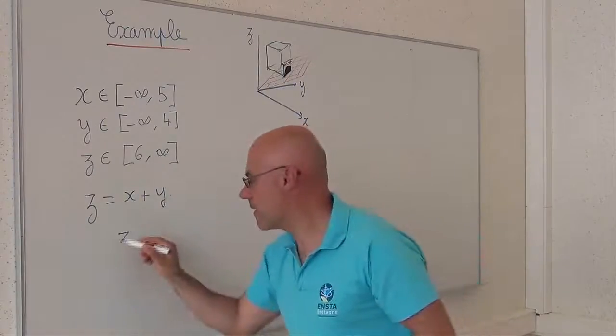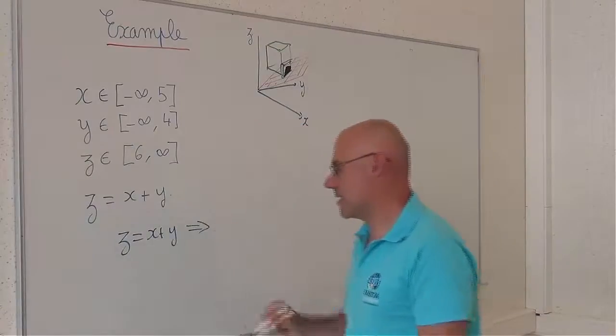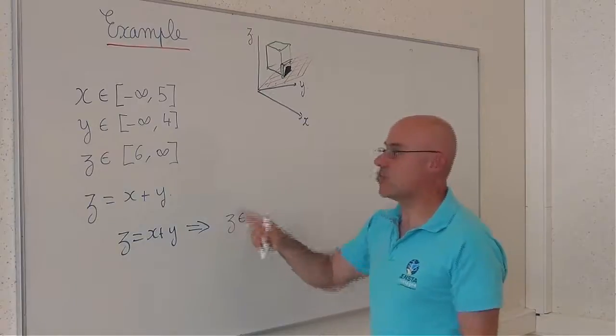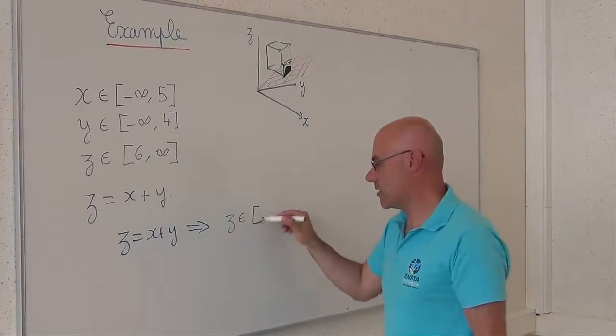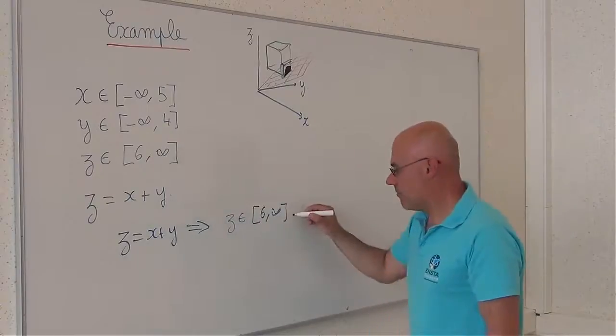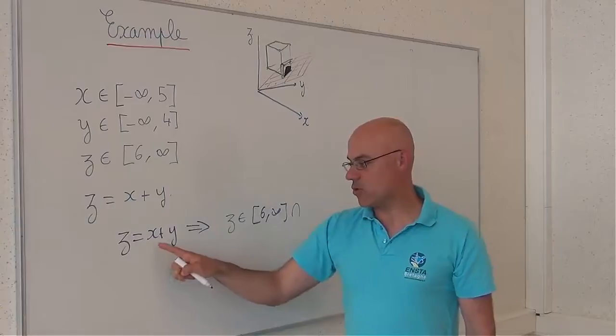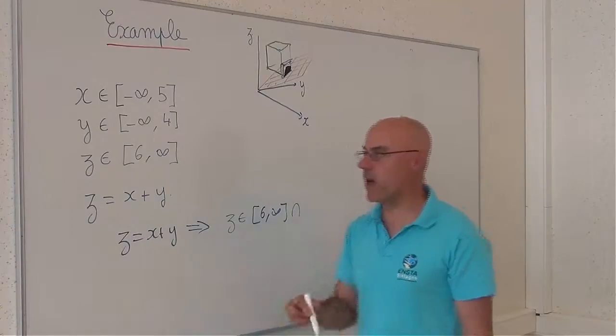So z equal to x plus y implies that z belongs to the previous domain, meaning infinity. I know this. But I also know that it should belong to the interval for x plus the interval for y.